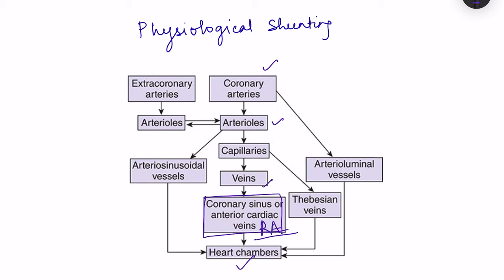However, there are other pathways: some coronary arteries directly drain into the heart chambers via arterioluminal vessels, and also via arteriosinusoidal vessels. This drainage is not limited to the right side — some drain into the left atrium and left ventricle as well. That blood does not get oxygenated; instead it mixes with oxygenated blood in the left atrium, decreasing the oxygenation of hemoglobin. This is known as physiological shunting.